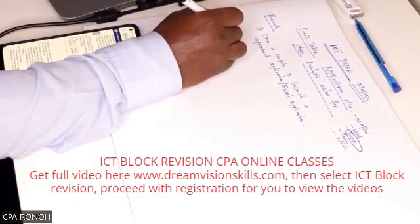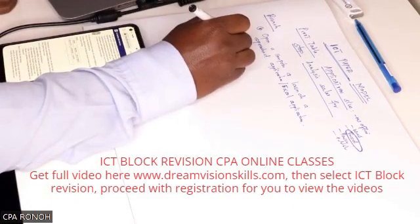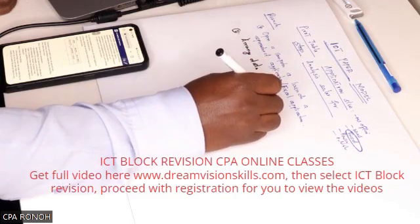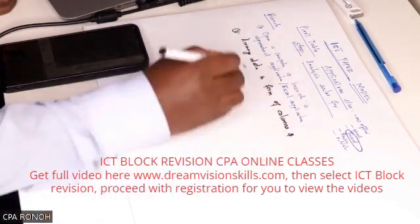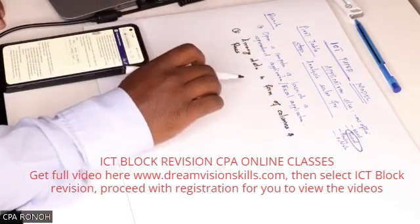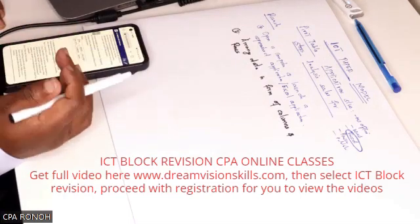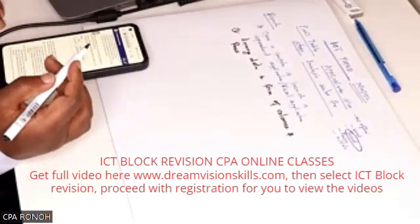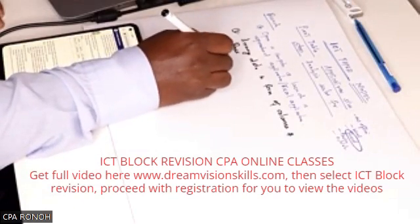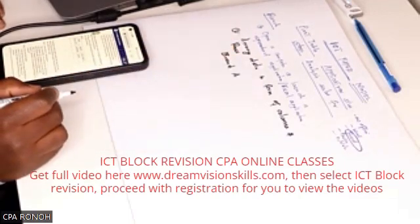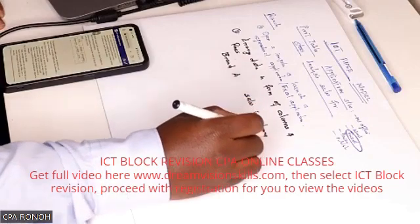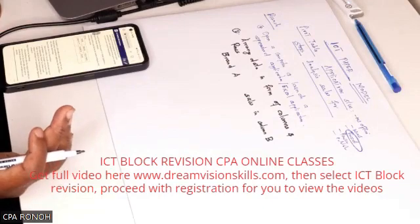The second step is to do your arrangement of data. Arrange data in the form of columns and rows. For example, you can have a table with a column called Brand — Brand A — in column A, and Sales in column B.